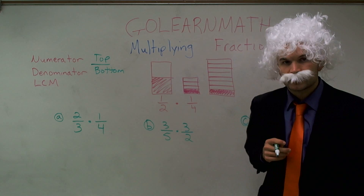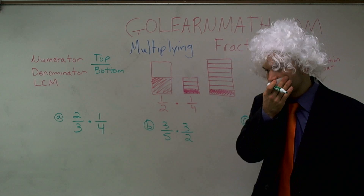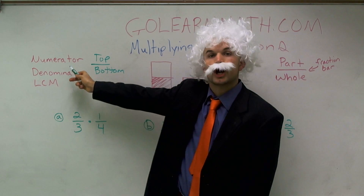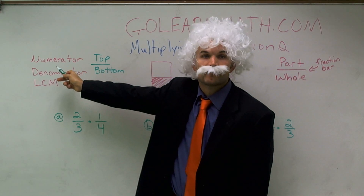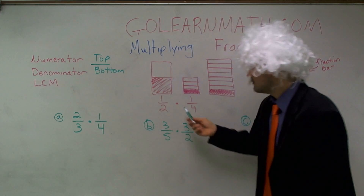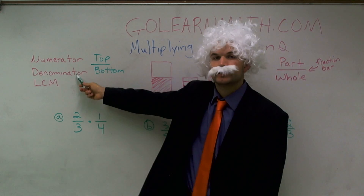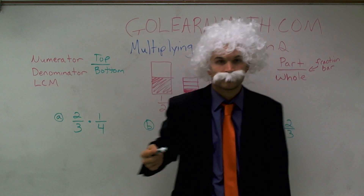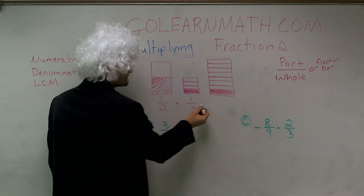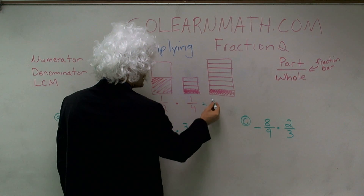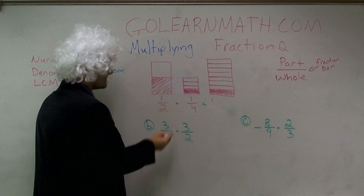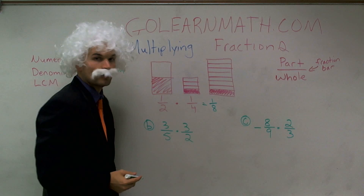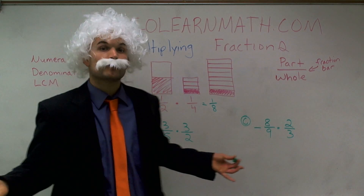When we multiply fractions, we multiply the tops — which we call the numerator — and we multiply the denominators, which is the bottom of the fraction. So one times one gives me one, and two times four equals eight. That gives us one eighth.